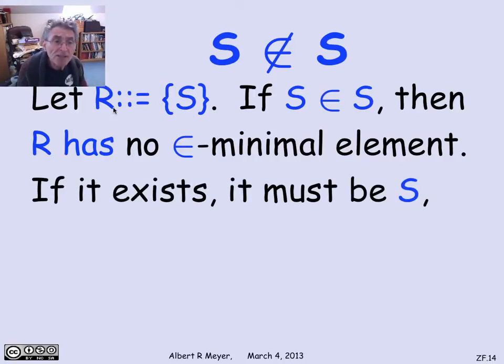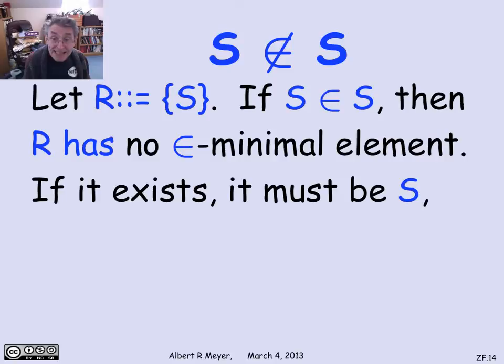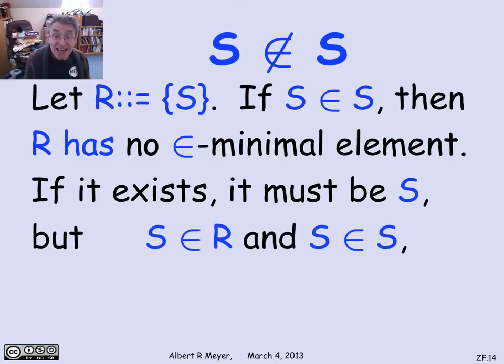Why does this follow? r is supposed to have a membership minimal element. Well, r has only got one element. So if it's got any membership minimal element, it's got to be s. But s can't be membership minimal because s is in r, which means that s has an element in r in it.